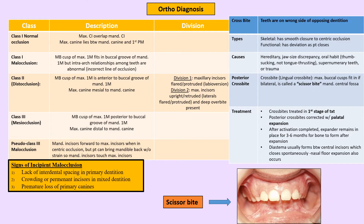Bilateral complete lingual cross bite is the scissor bite. Cross bites do not self-correct — they worsen with time — so treatment should start as early as possible in the first stage of ortho treatment. There are two stages: the early interceptive phase, which starts once the child has all permanent incisors and first molars erupted, around 8 to 11 years of age.